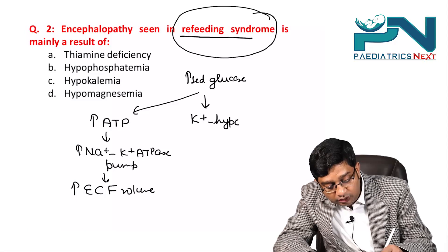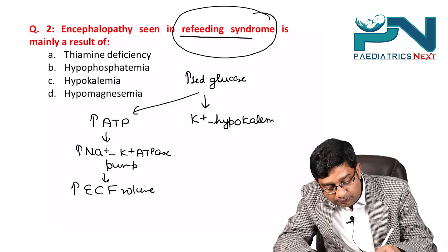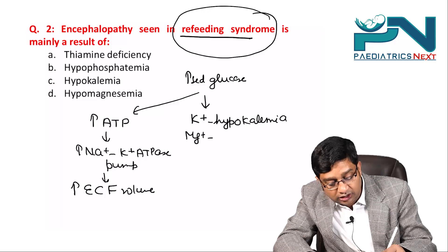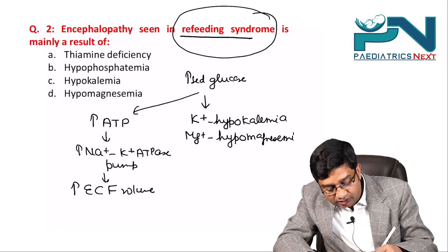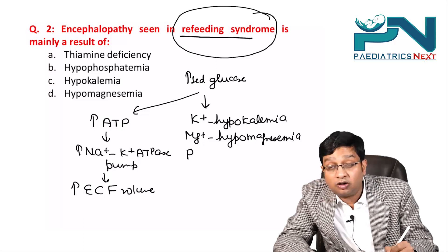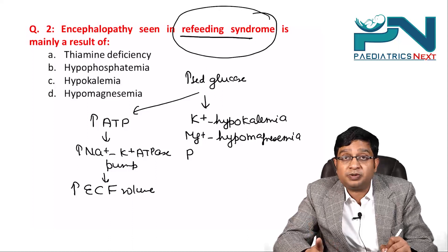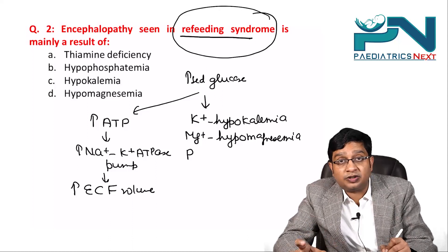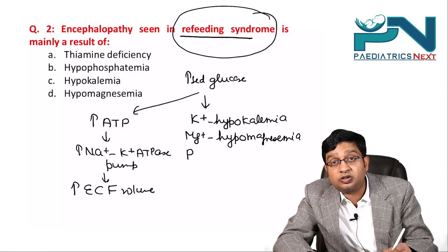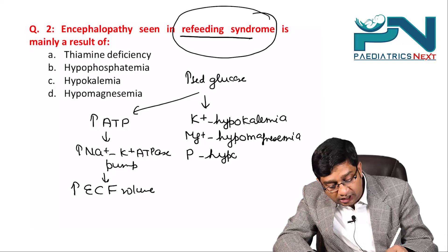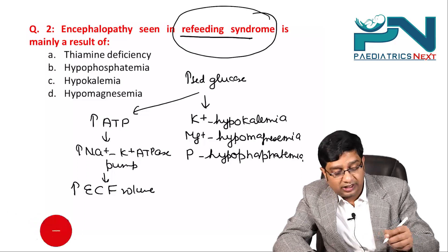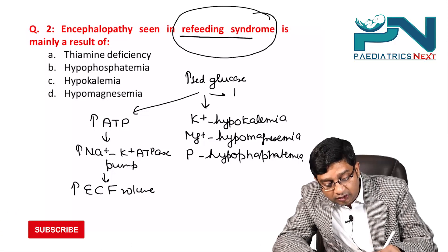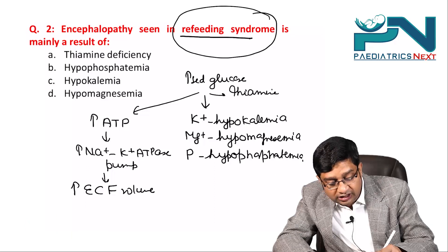Secondly, if glucose utilization is increased inside the cell, potassium moves in, causing hypokalemia. Similarly, magnesium is also utilized inside the cell, causing hypomagnesemia. Phosphorus is also used inside the cell because phosphorus along with ADP is required for ATP formation, leading to hypophosphatemia.